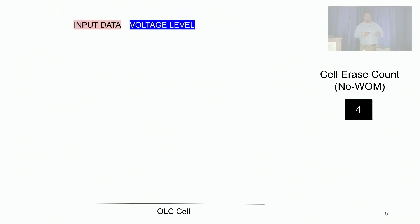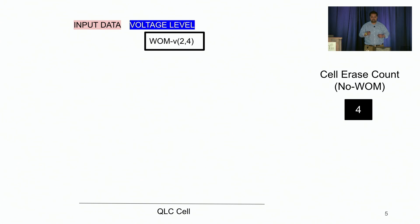Now let's see how the same writes would happen when we are using WOM V codes. In WOM V codes, we transform k bits of input data into n bits of voltage level, represented by the blue column here. So for example, for a WOM V(2,4) configuration, two bits of input data would be transformed into four bits of voltage level, represented by one of the 16 voltage levels.